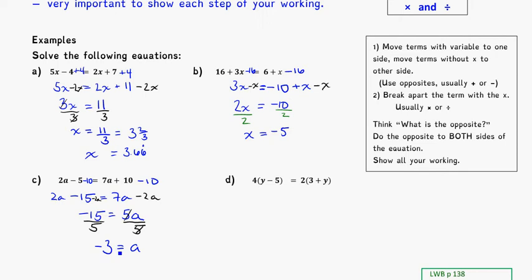That leaves me with a is equal to negative 15 divided by 5, which is negative 3. It's okay to say negative 3 is equal to a, and I can also rewrite that as a is equal to negative 3. It doesn't really matter — a fun thing about equations is you can flip everything from the right-hand side to the left-hand side and it still says the same thing.